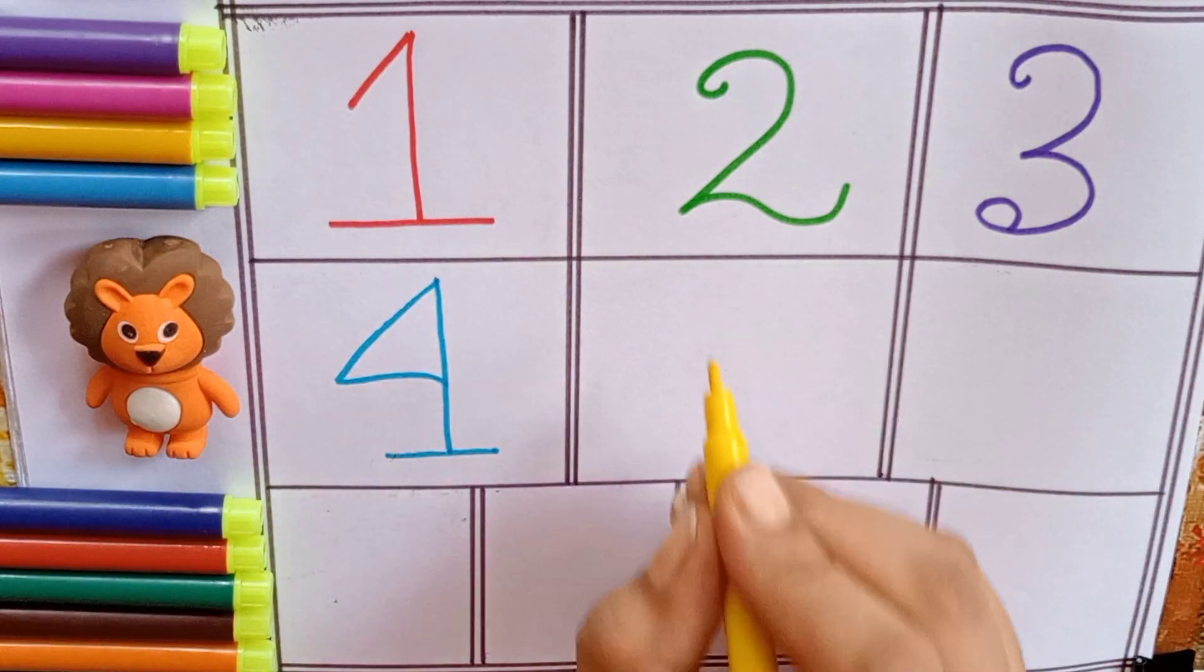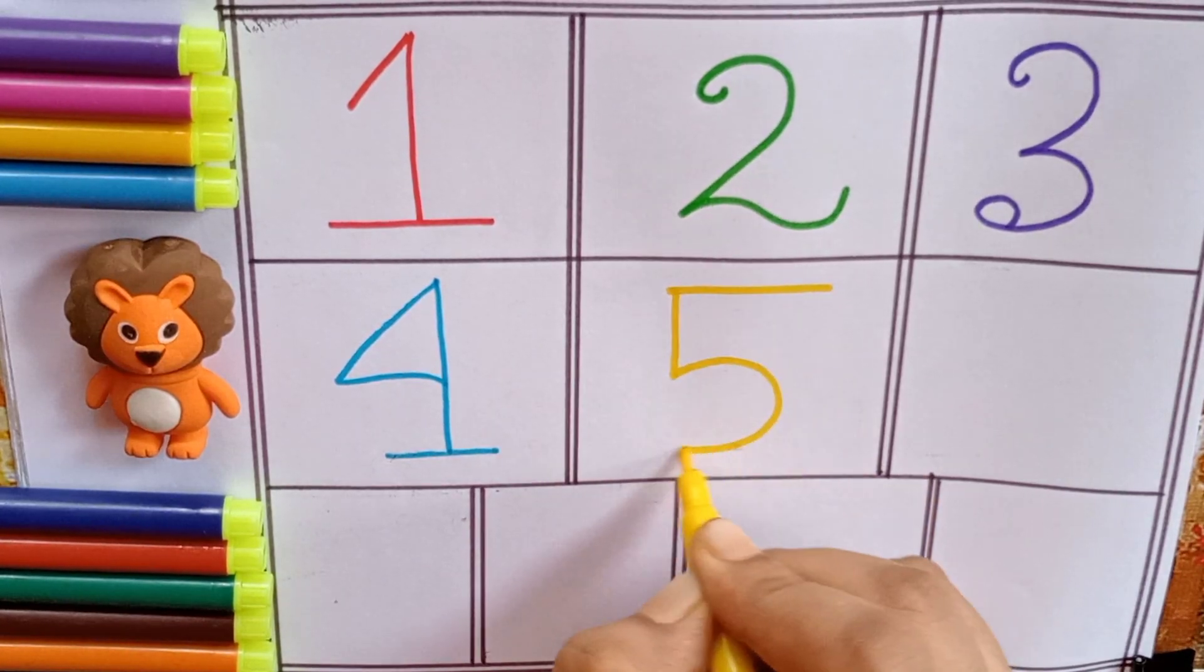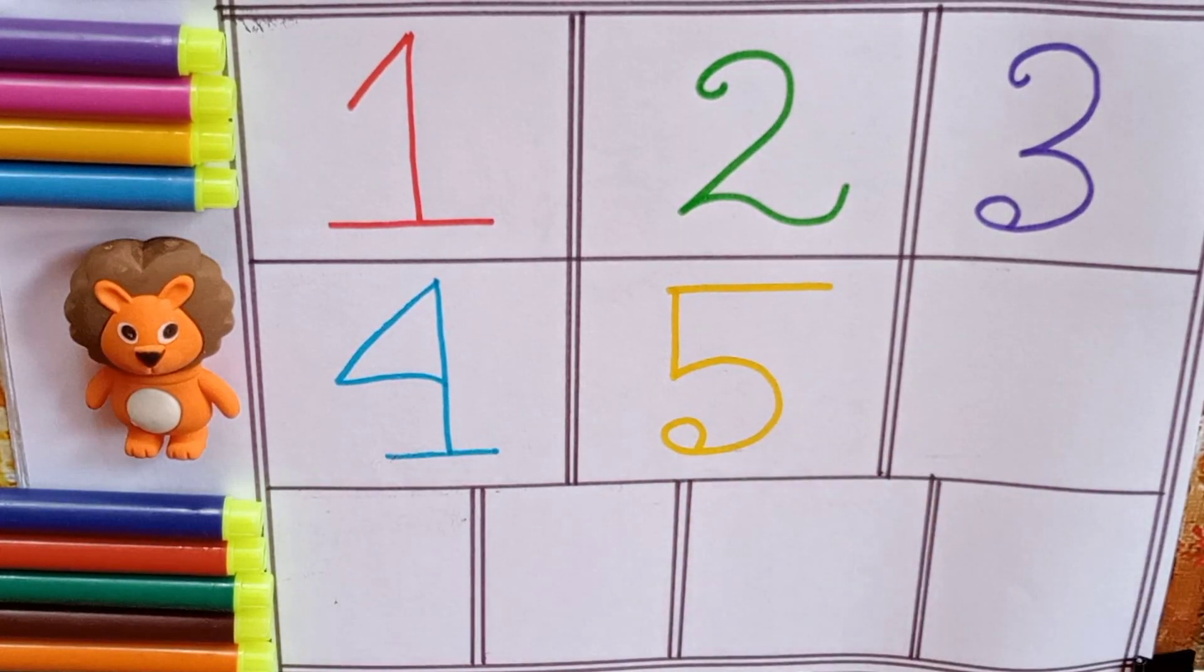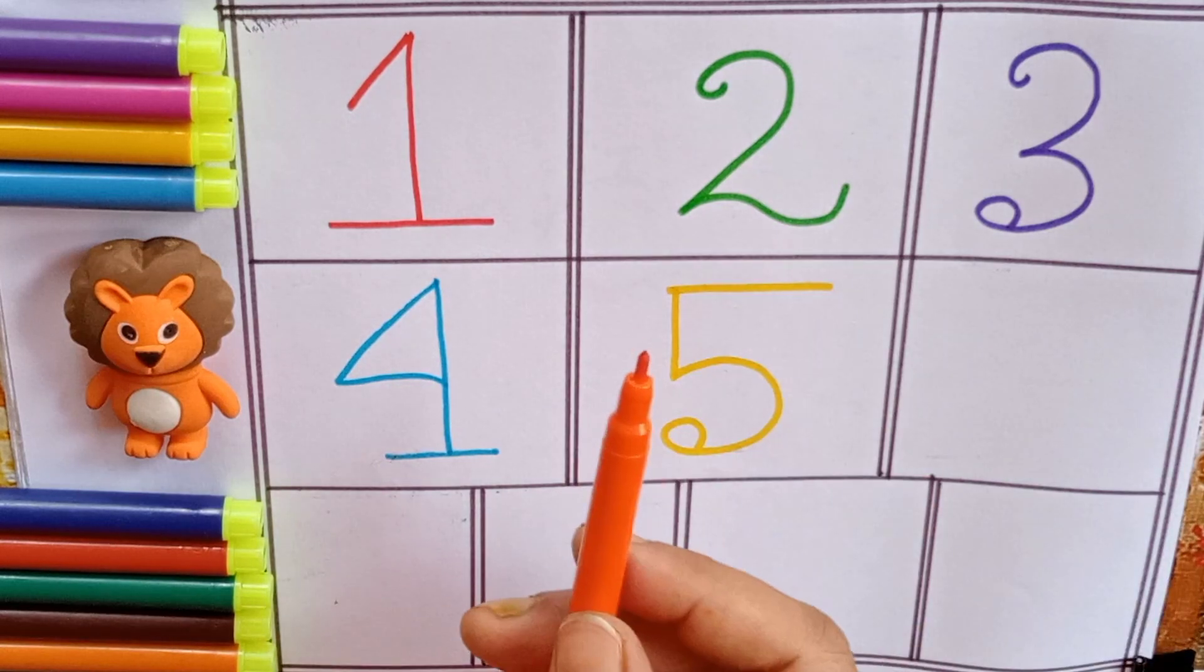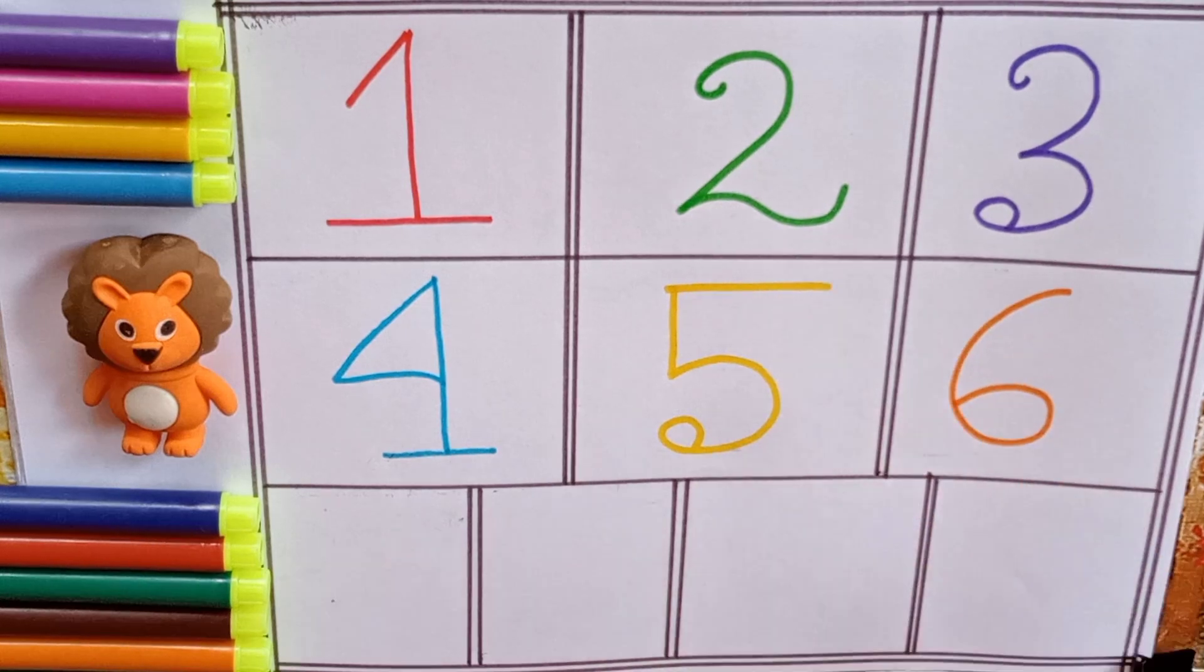Yellow. Five. F-I-V-E. Five. Orange. Six. S-I-X. Six.